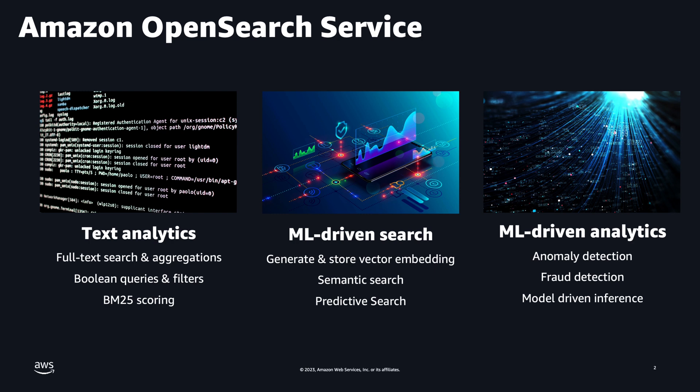With OpenSearch service on AWS, harness its capabilities to build scalable cloud applications. This robust engine enables text analytics with full-text searches, aggregations, and boolean searches, leveraging the accurate BM25 algorithm. It goes beyond text analytics by integrating machine learning tools for generating and storing vector embeddings, enabling semantic and predictive searches.